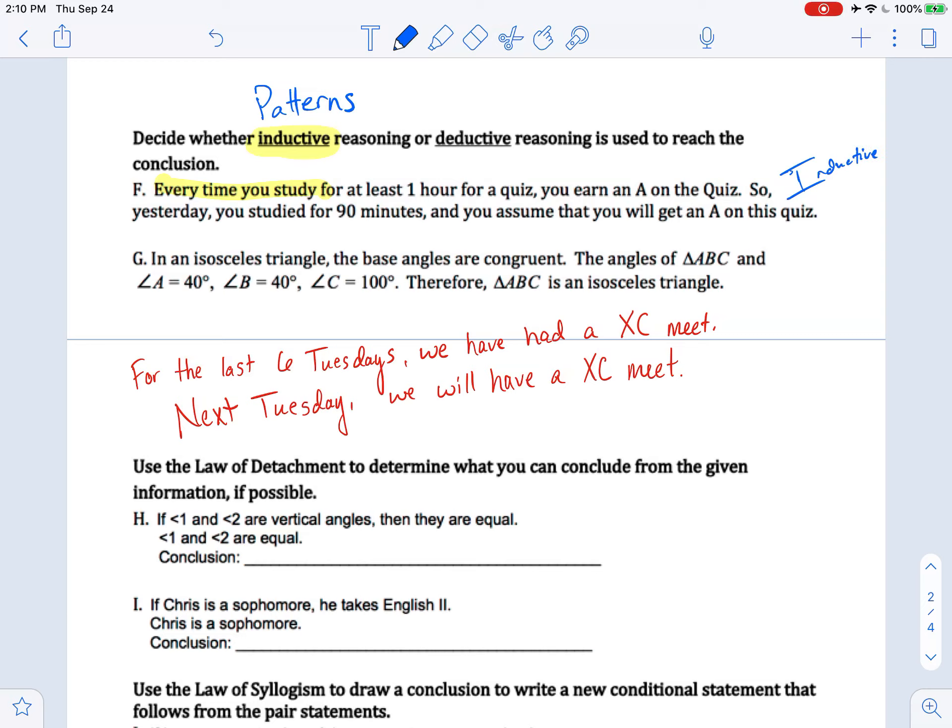Now let's look at this next one that I hand wrote. For the last six Tuesdays, we have had a cross-country meet. Next Tuesday, we will have a cross-country meet. So for the last six Tuesdays, that's the kind of phrase you're looking for for inductive reasoning. Those patterns that have happened in the past, those are the ones that really key off there.